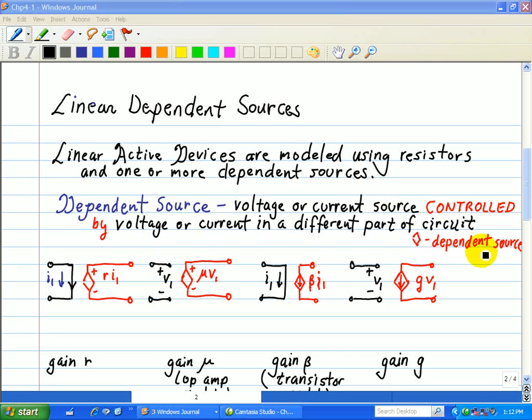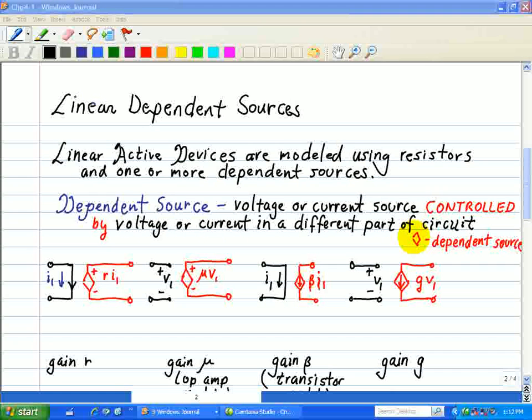We usually denote a dependent source with the symbol of a diamond. Let's look at some examples of dependent source circuit symbols.